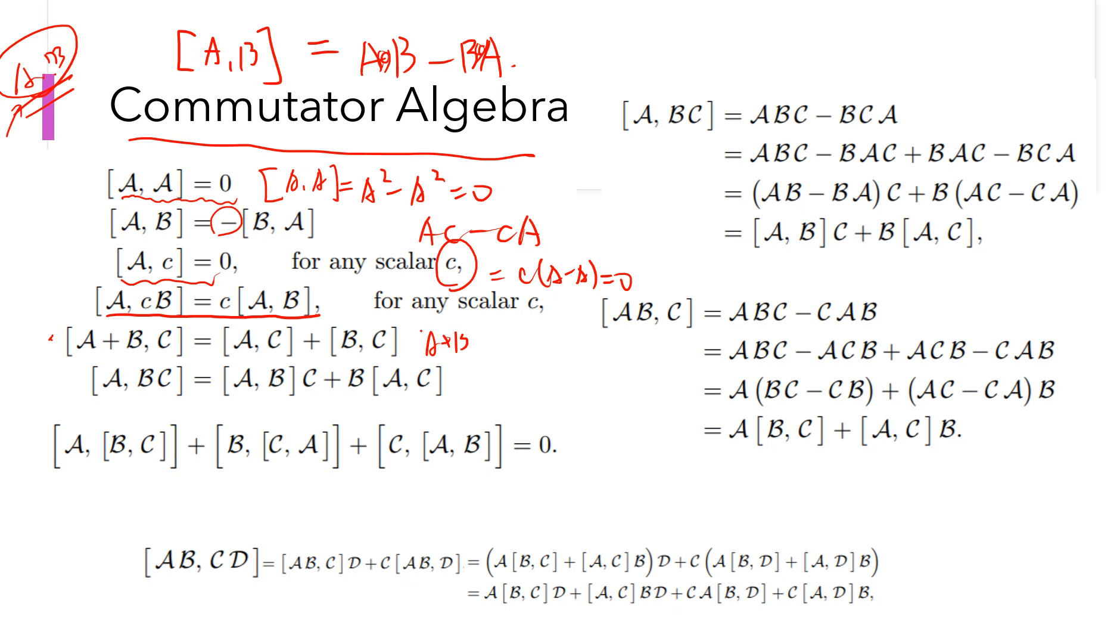The reason is that [A + B, C] minus C [A + B] is just A C plus B C minus C A minus B C. So this is [A, C], this is [B, C]. Okay, so this one, I prove here.